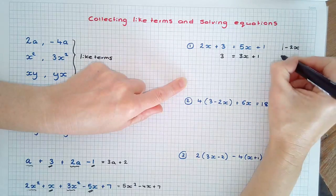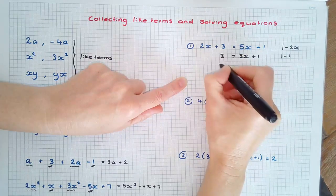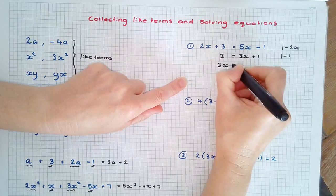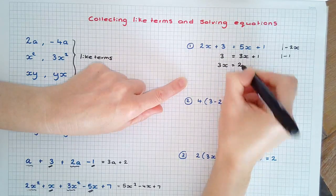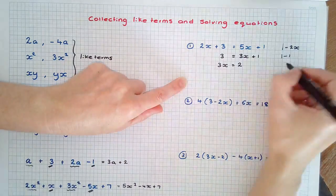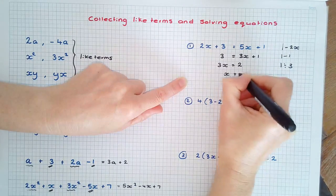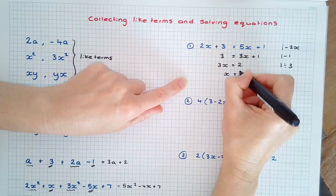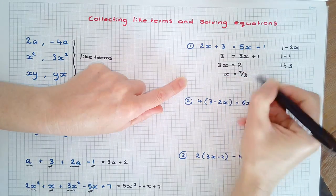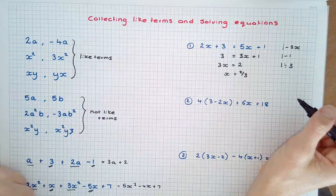The inverse of plus 1 is minus 1. Taking away 1 from each side of the equation and then dividing by 3, x equals 2 thirds. Of course we would also check and make sure the left-hand side equals the right-hand side.